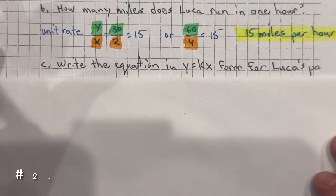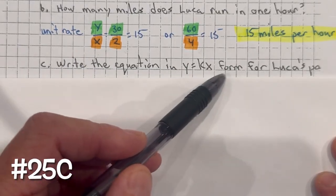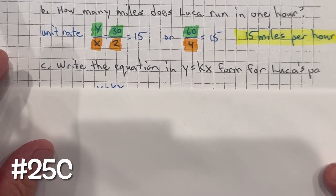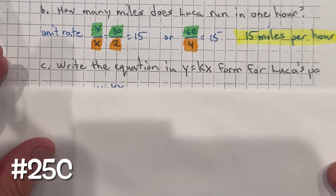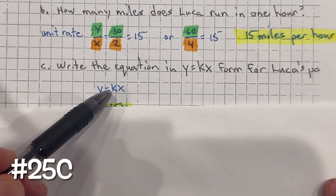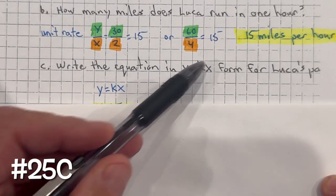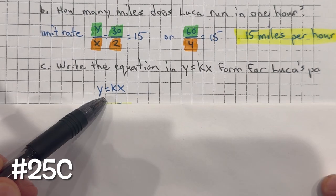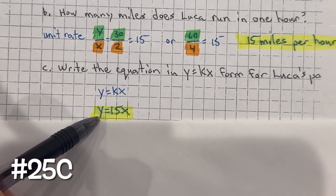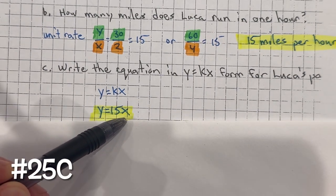Part C: write the equation in y = kx form for Luca's pace. The k represents the unit rate. Now that we found the unit rate, we can write it as y = 15x.